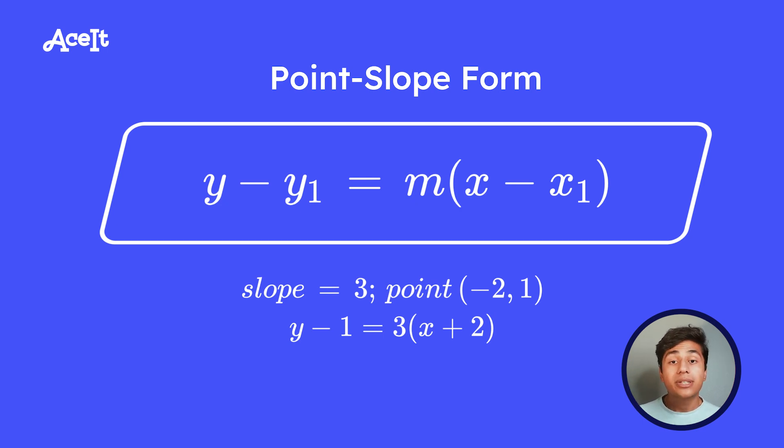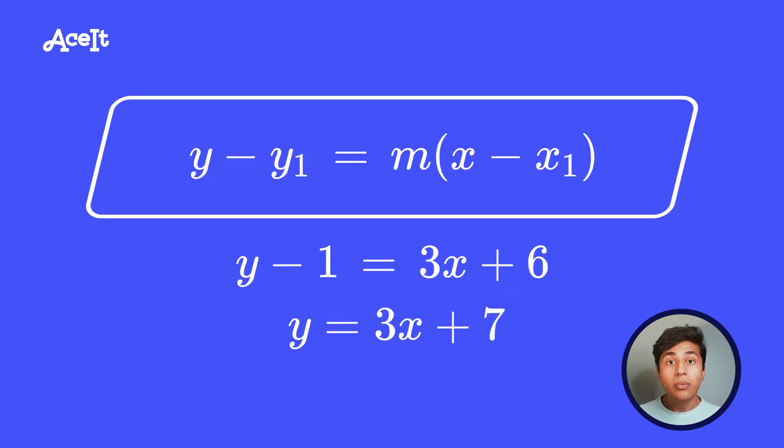Similar to what we did with standard form, we can easily convert between point-slope form and slope-intercept form by rearranging the equation. So we take our original point-slope form that we talked about in our last example, and we can distribute the 3 and get y minus 1 equals 3x plus 6. Then we can move the negative 1 to the other side by adding 1 on both sides and getting y equals 3x plus 7.